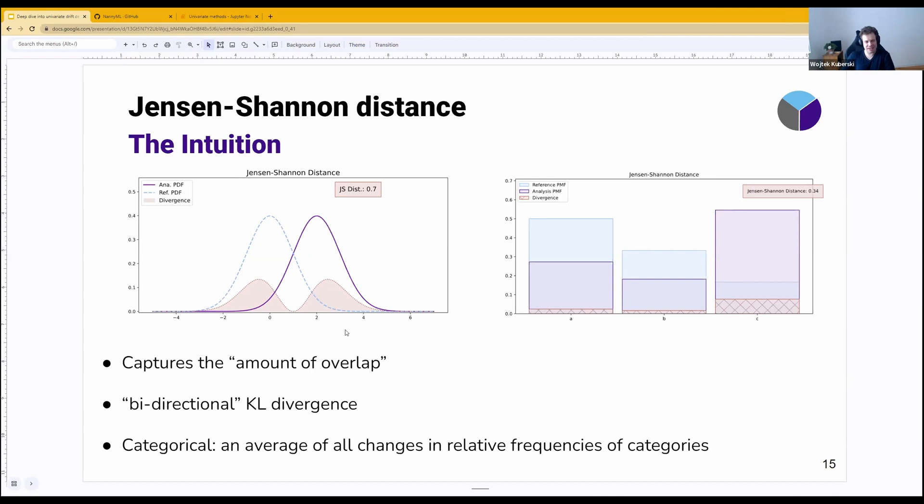Jensen-Shannon distance is symmetrical. And what you see here in red, as you will always see in red, is a graphical representation of the divergence or distance measure that we're looking at. So if the distributions are not the same, we're going to go higher. And it is the average of comparing A to B and B to A.